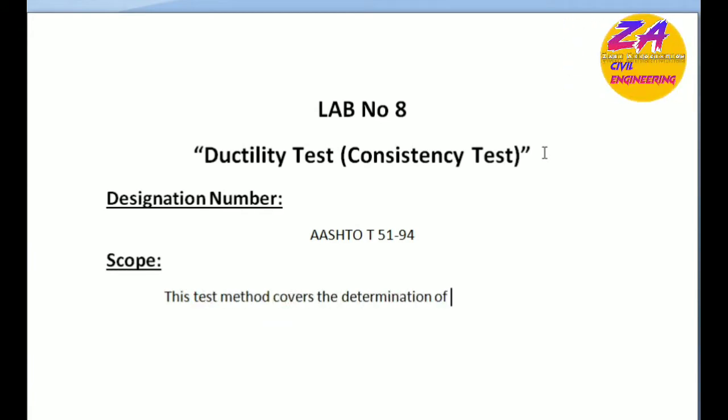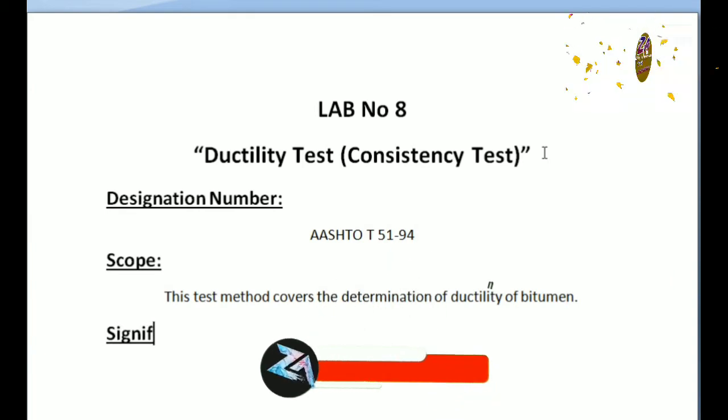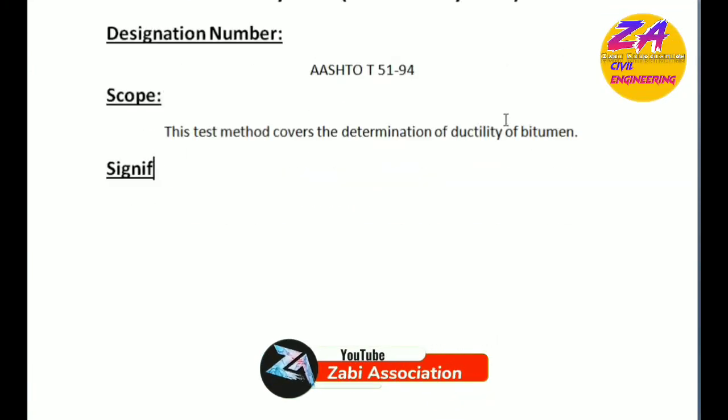Let's start our lecture. First of all, the designation number related to this experiment is AASHTO T51-94. The scope of this test covers the determination of ductility of bituminous materials.